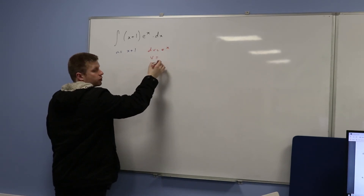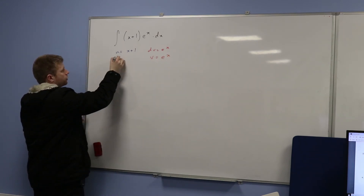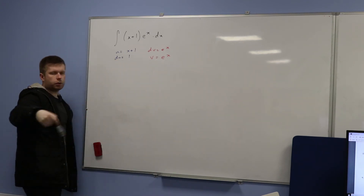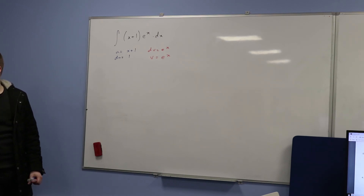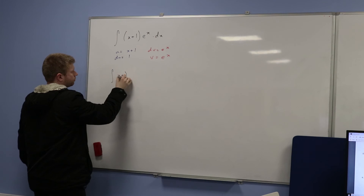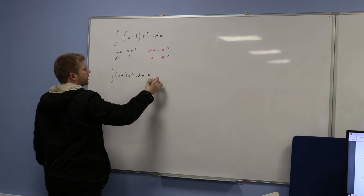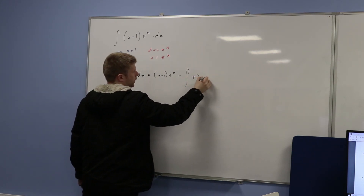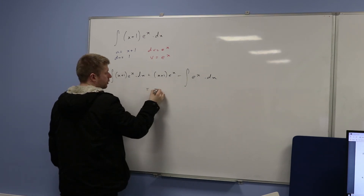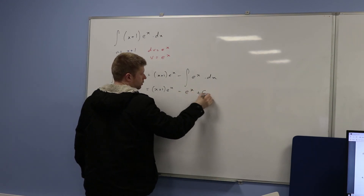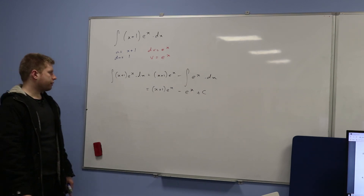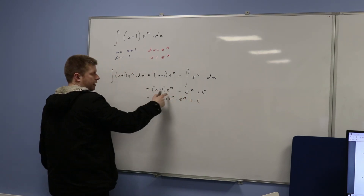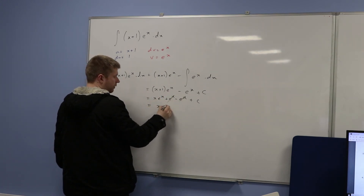If dv equals eˣ, then v equals eˣ. And if u equals (x + 1), du equals one. Applying the by-parts formula: the integral equals u·v minus the integral of v·du, so it's (x + 1)·eˣ minus the integral of eˣ, which is (x + 1)·eˣ minus eˣ. Expanding the bracket: x·eˣ + eˣ − eˣ + c. The eˣ terms cancel, leaving just x·eˣ + c.